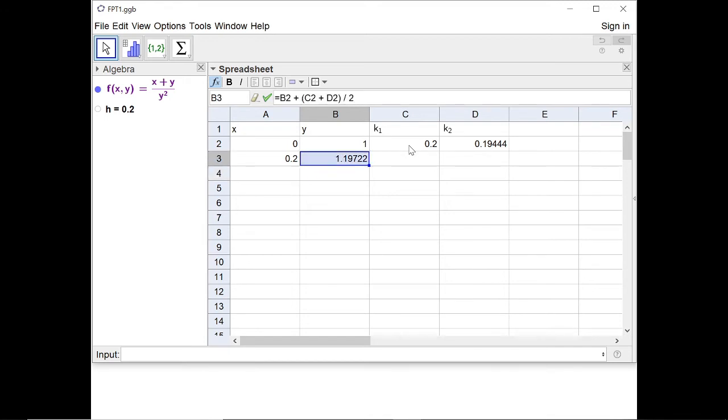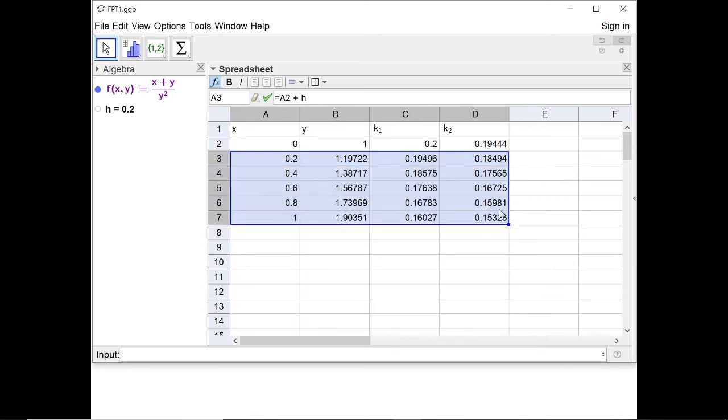And now that I've got my new values of x and y, I can make my new values of k₁ and k₂. And then I can continue, fill this down the grid up to x equals 1. And I get my first approximation for y, which is 1.90351.